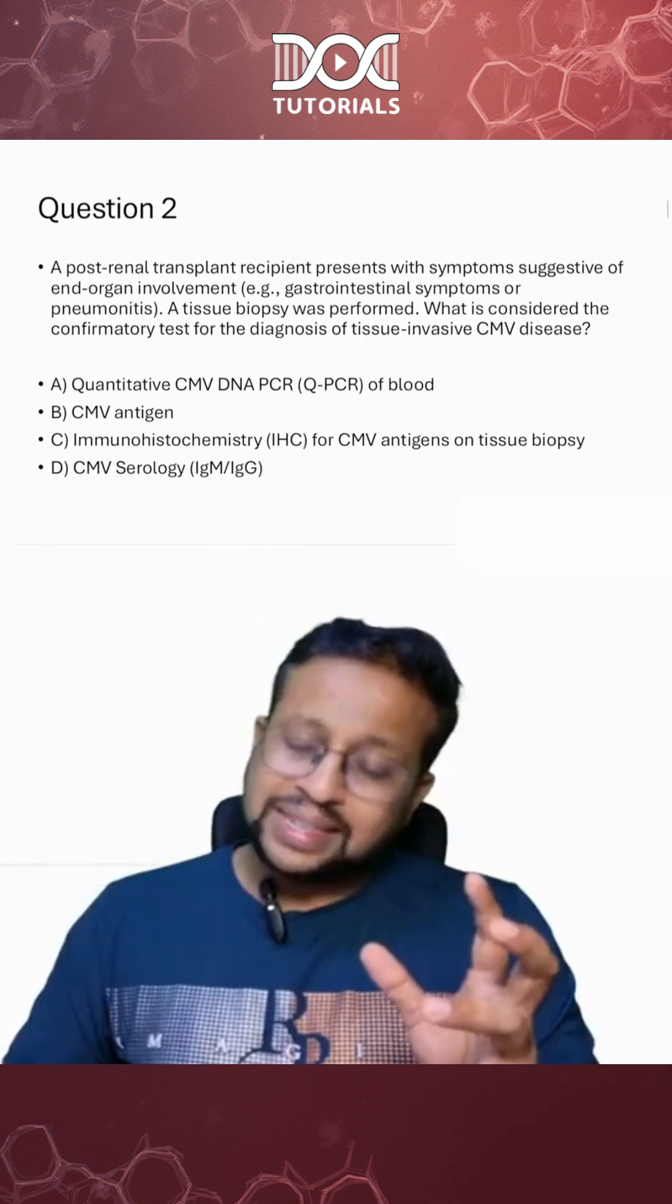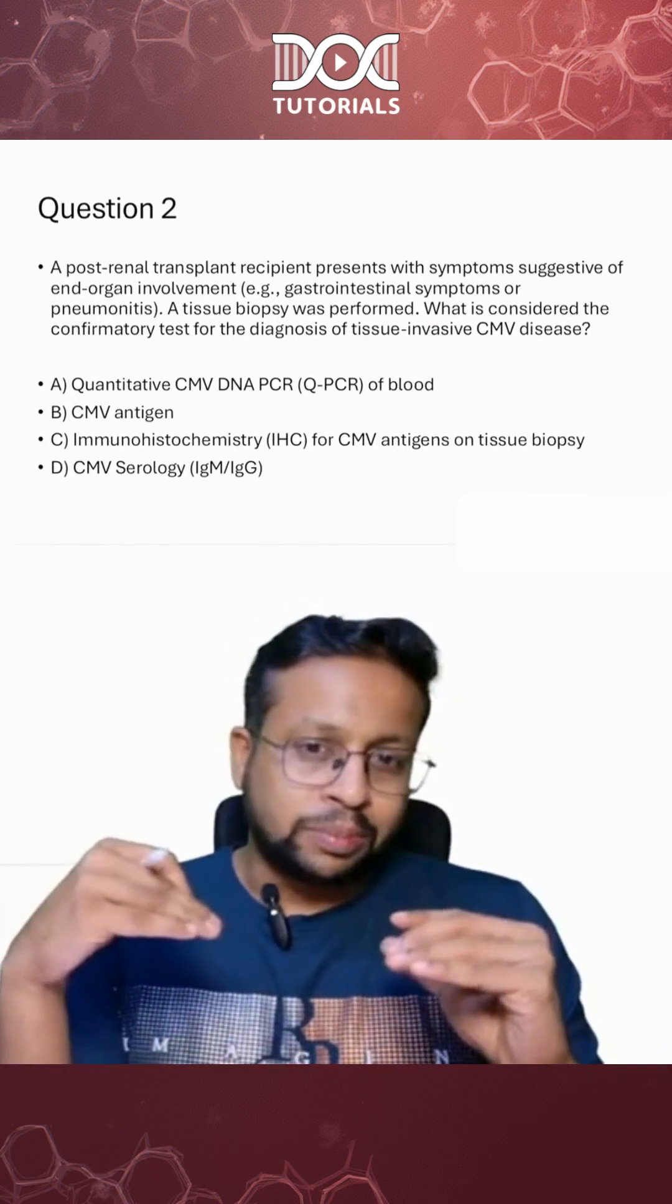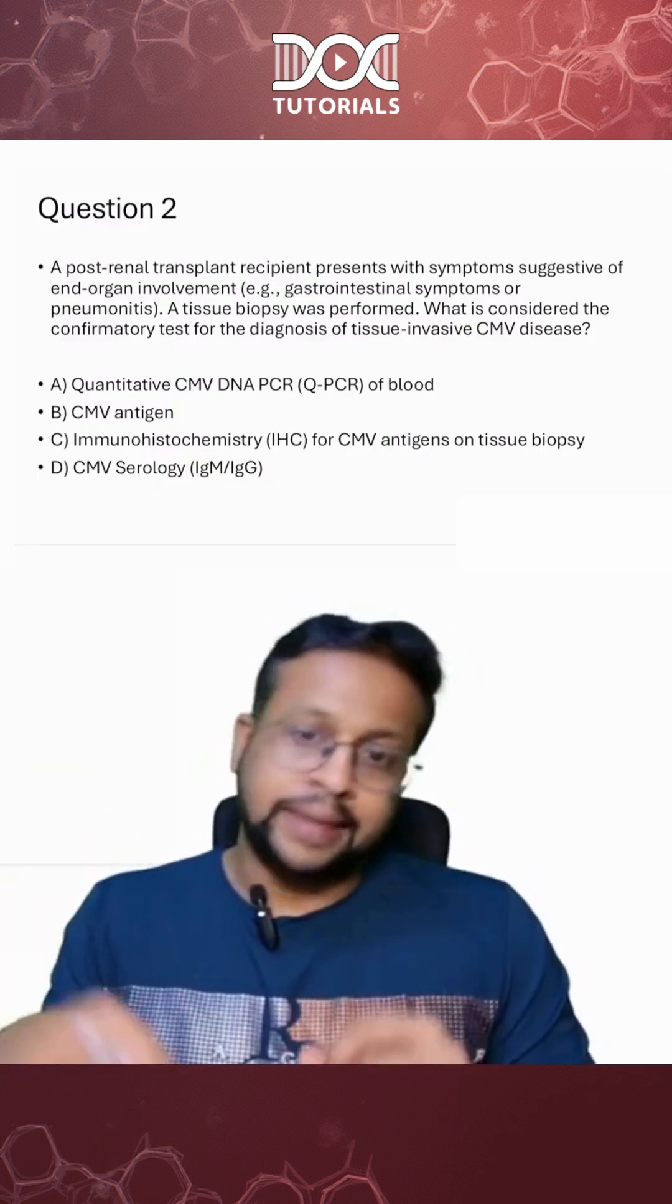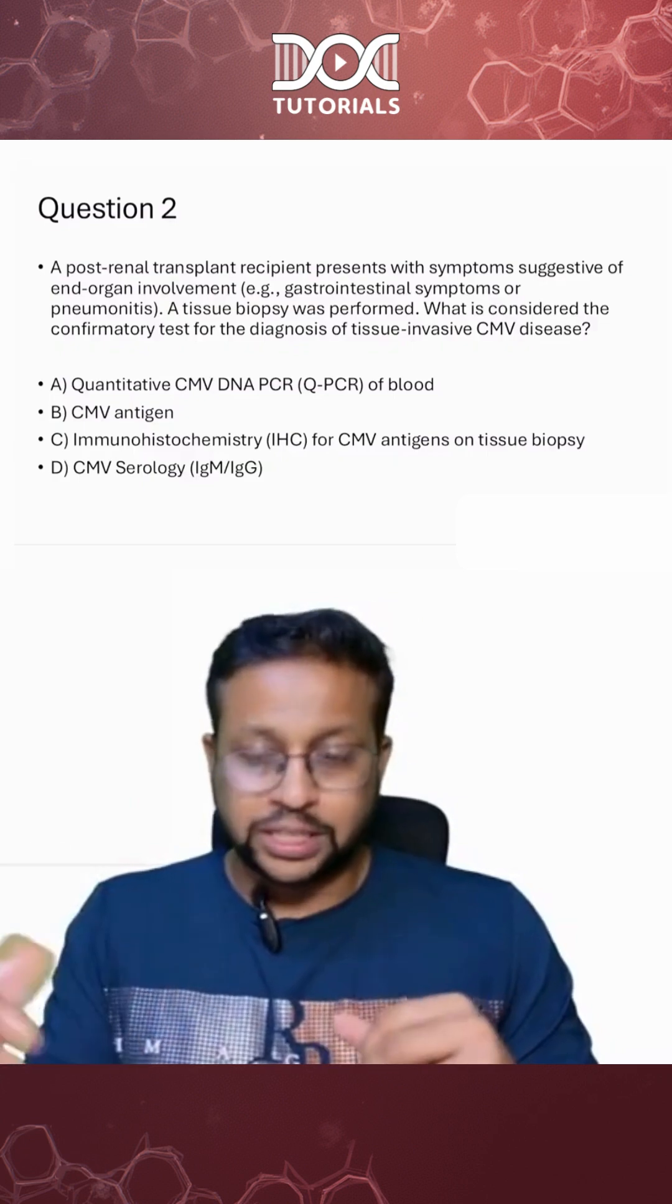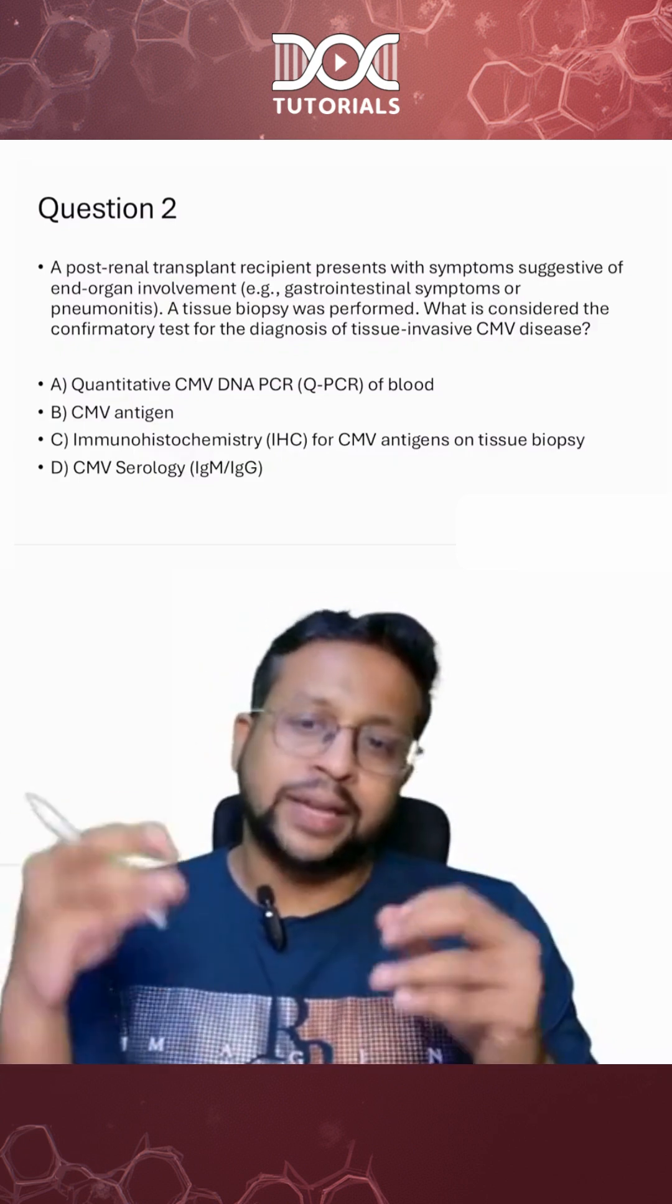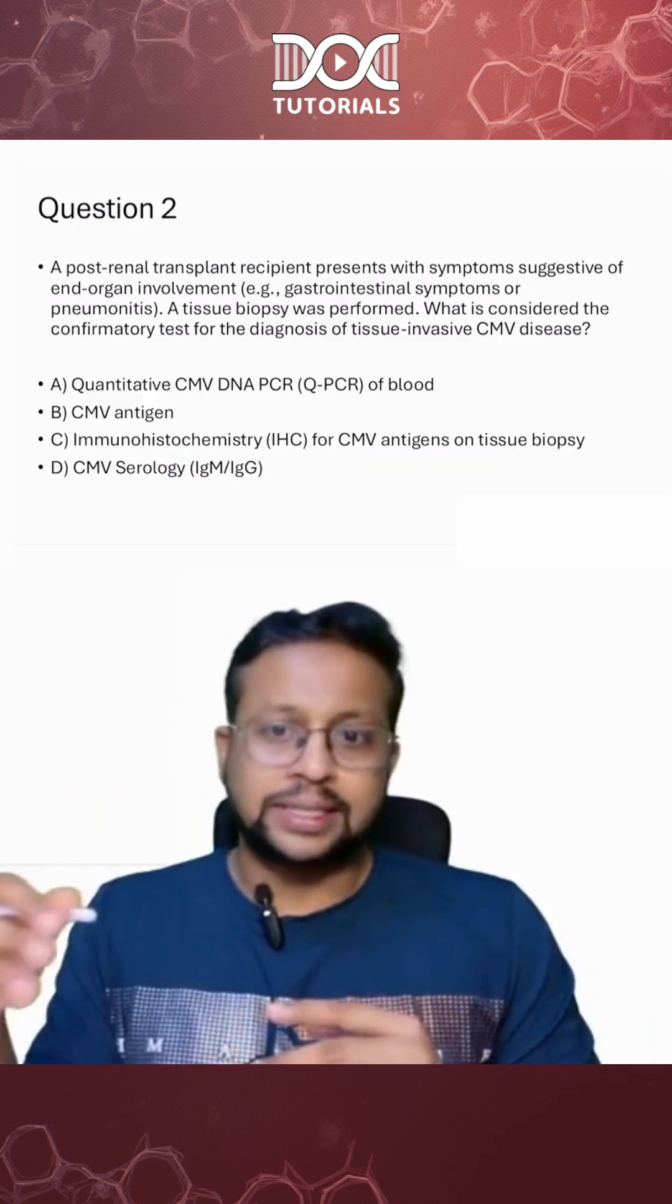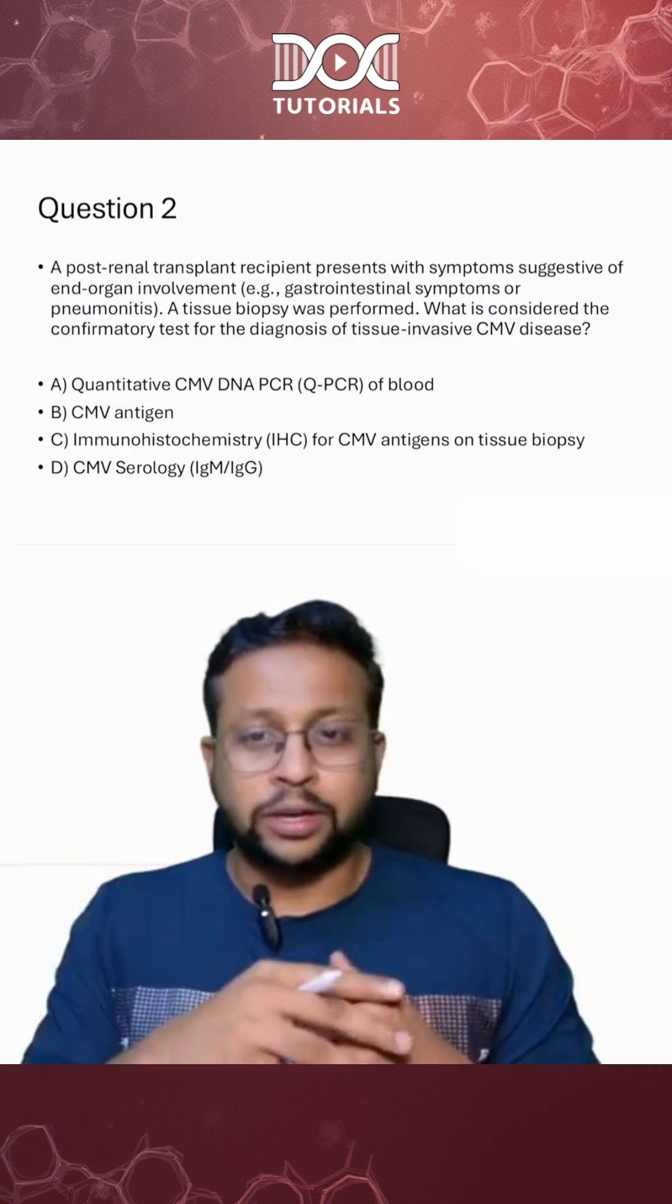Whatever the situation, if you have a tissue invasive disease, the diagnosis is not based upon blood PCR. The blood can have CMV viremia even without tissue invasive disease. To prove that the patient has tissue invasive disease like pneumonitis or colitis, you have to take the tissue, demonstrate the cytomegallic cells as well as the owl-eye inclusions. But that sometimes may not be very sensitive.